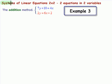This is our third example of solving a system of linear equations 2 by 2. That is, two equations in two variables. And we're using the addition method still, sometimes called the method of elimination.